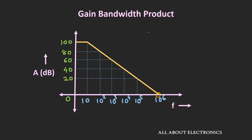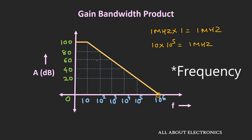For example, if we are operating the op-amp at the unity gain frequency, the frequency of operation will be equal to 1 MHz and the gain of the op-amp is 1, so the product of frequency and gain equals 1 MHz. Similarly, if we are operating at the cut-off frequency fc, the gain of the op-amp is 10 to the power 5, and again the gain and frequency product equals 1 MHz. So as you can see, in this particular region the product of gain and frequency is constant, and that is known as the gain bandwidth product of the op-amp — it will always be equal to the unity gain frequency.